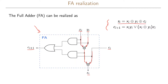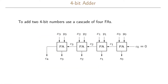...we first AND xi and yi, which feeds into an OR gate. We also compute xi XOR yi, which feeds into an AND gate with ci, and that result also feeds into the OR gate. So ci+1 is realized by an AND of xi and yi, an AND of (xi XOR yi) with ci, with both feeding into a final OR gate.